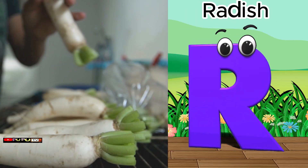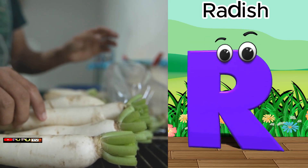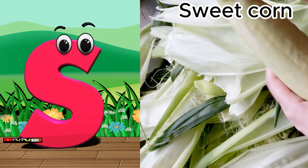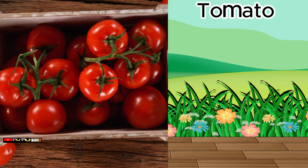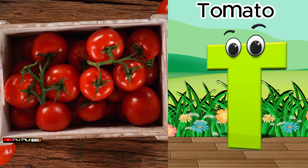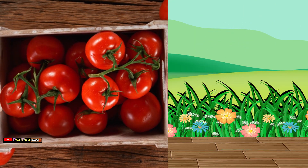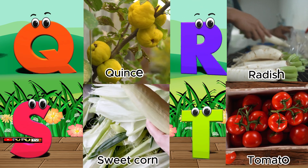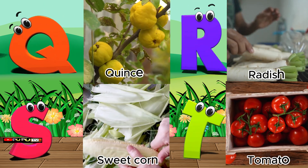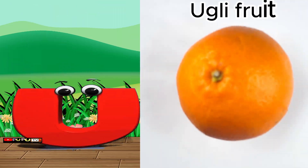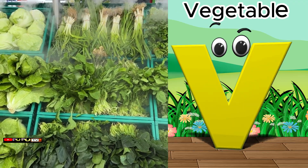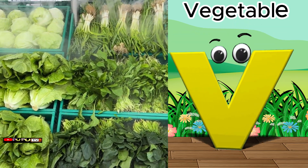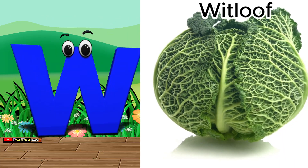R is for radish. S is for sweet corn. T is for tomato. U is for ugly fruit. V is for vegetables.